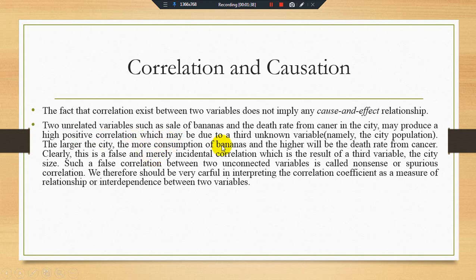Higher death rate may be due to some other unknown variables not taken as a variable in the model. If we have a larger city where the population is higher, then definitely consumption of banana is higher, and if the city has a larger population, then definitely some particular disease causes the death rate to also rise. So we found a correlation, but this correlation is normally called false correlation, or nonsense or spurious correlation, because there is no logical or theoretical background for this.